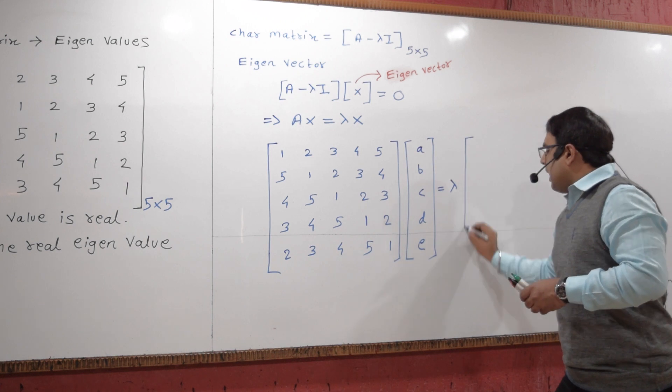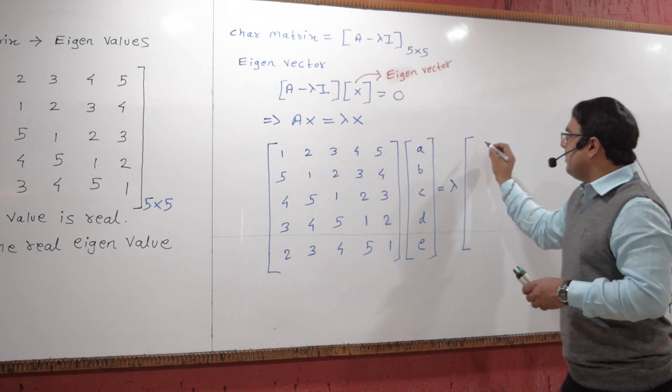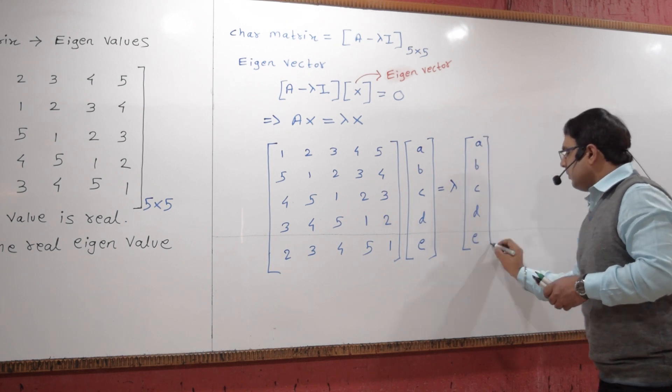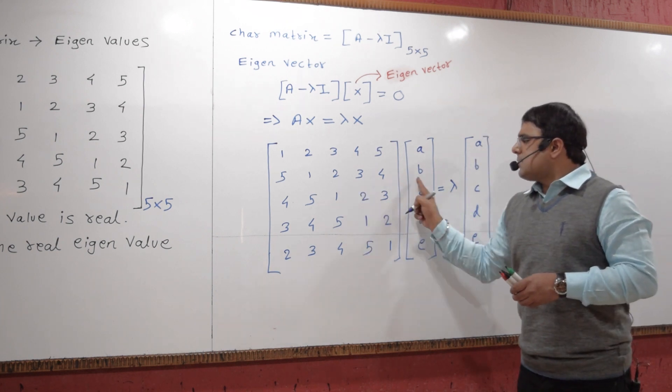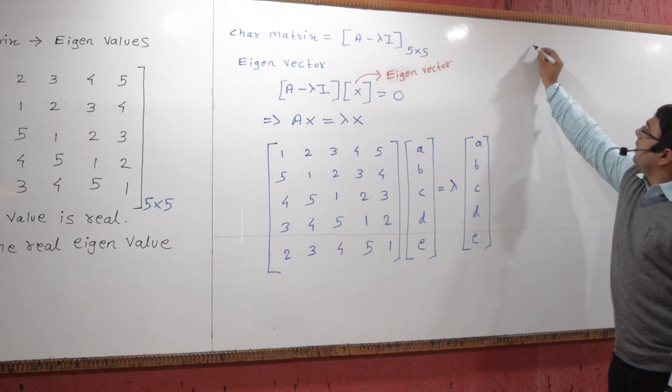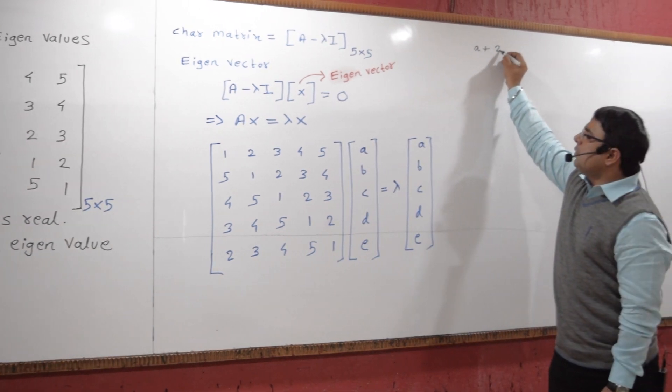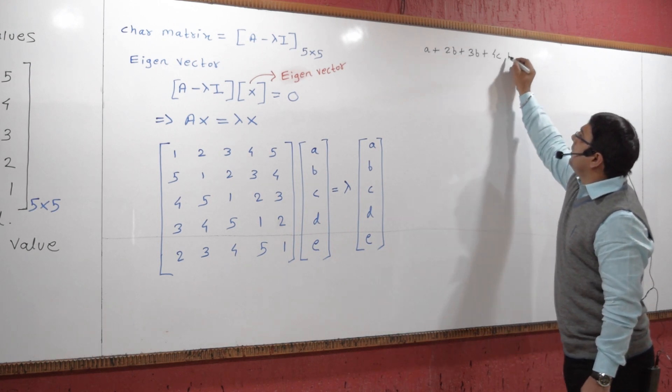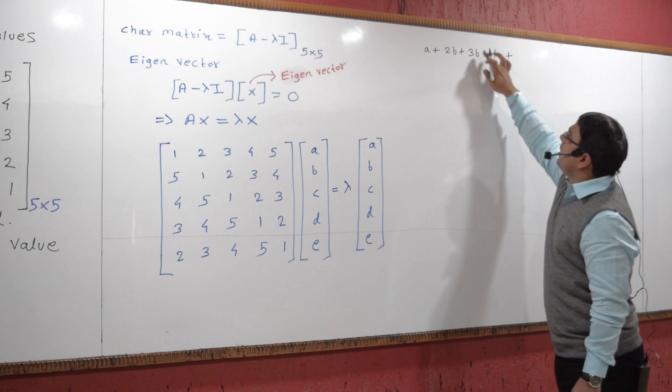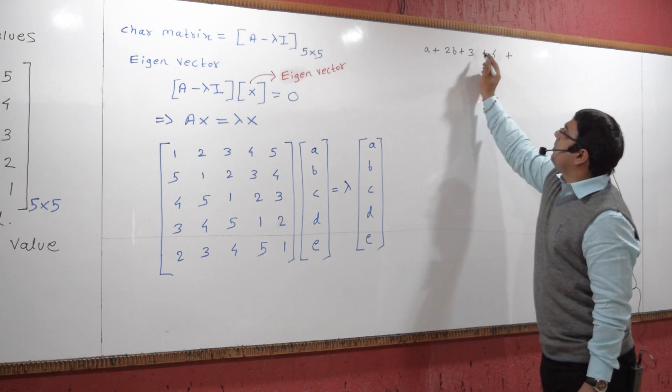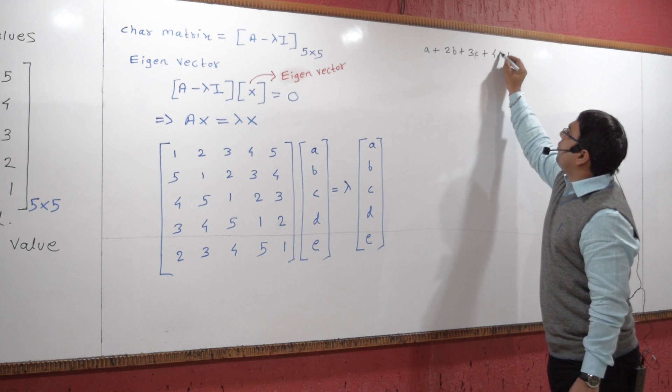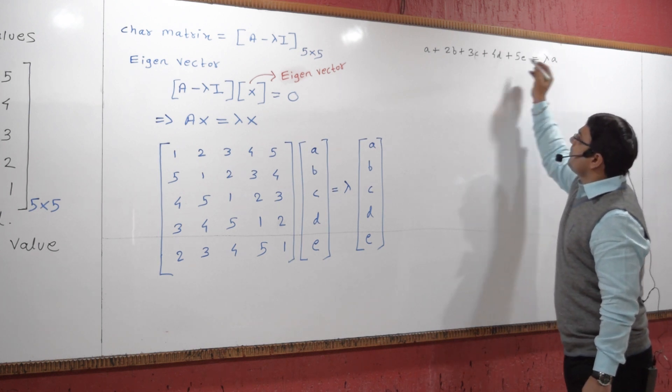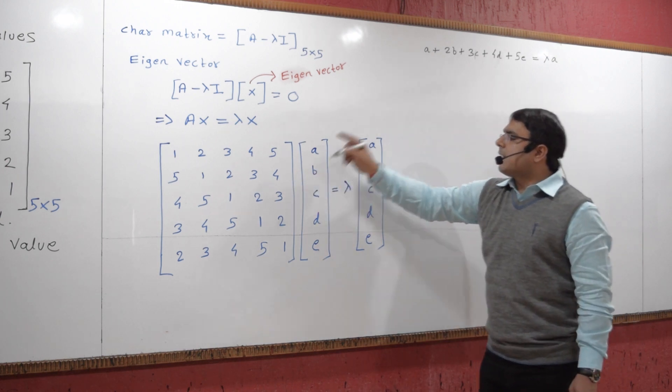Multiplying these two matrices, we will get: a plus 2b plus 3c plus 4d plus 5e equals lambda times a.